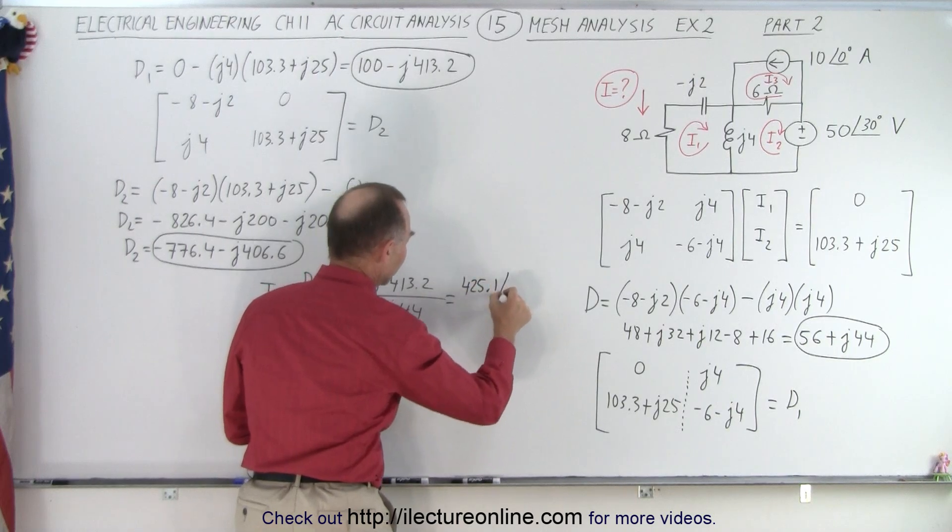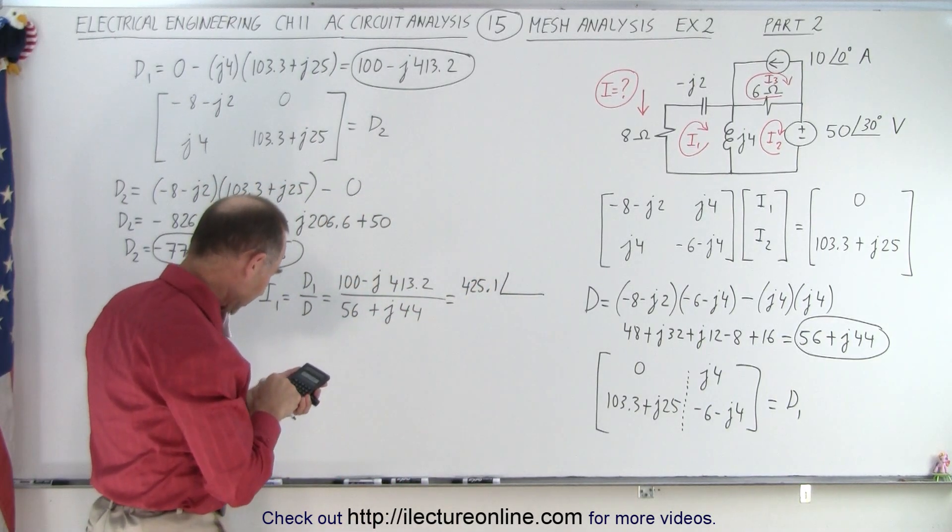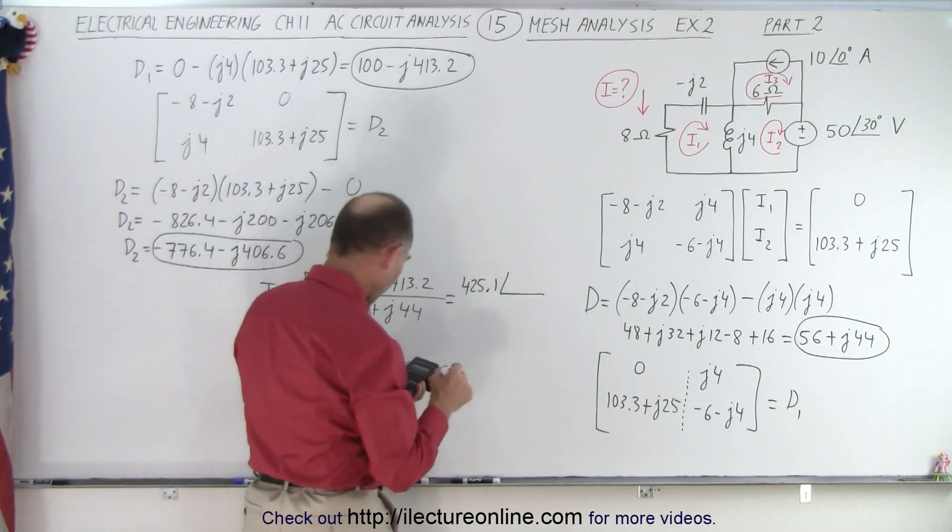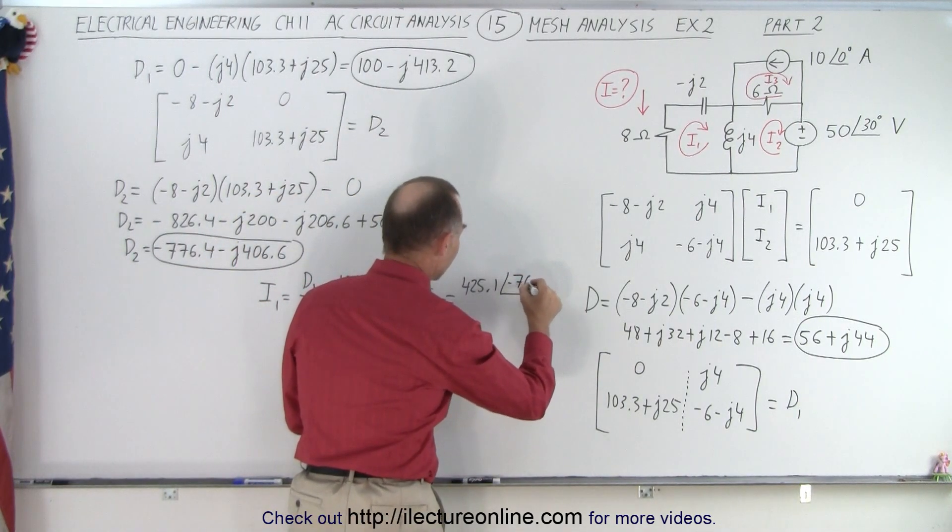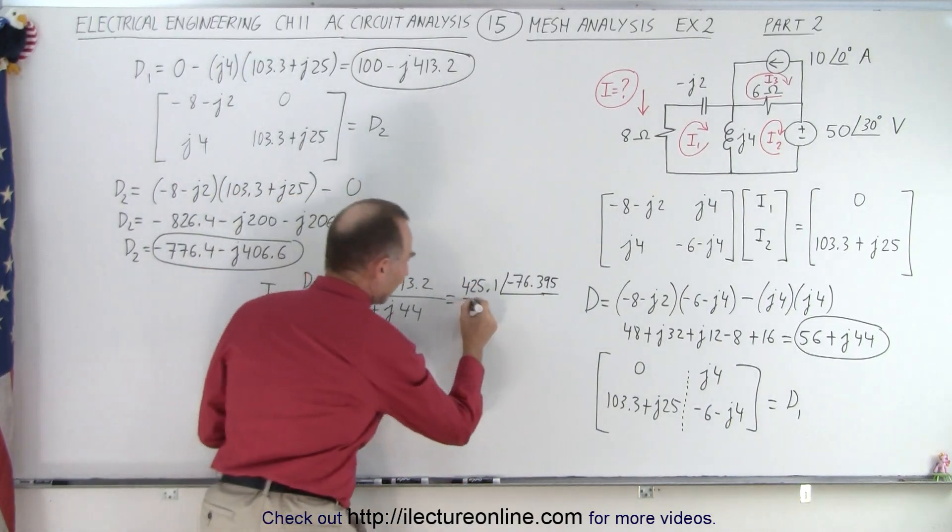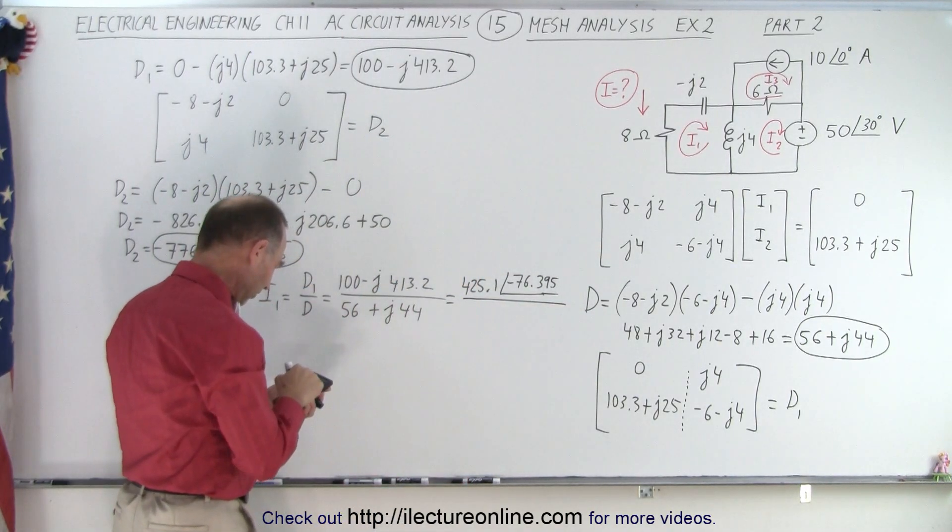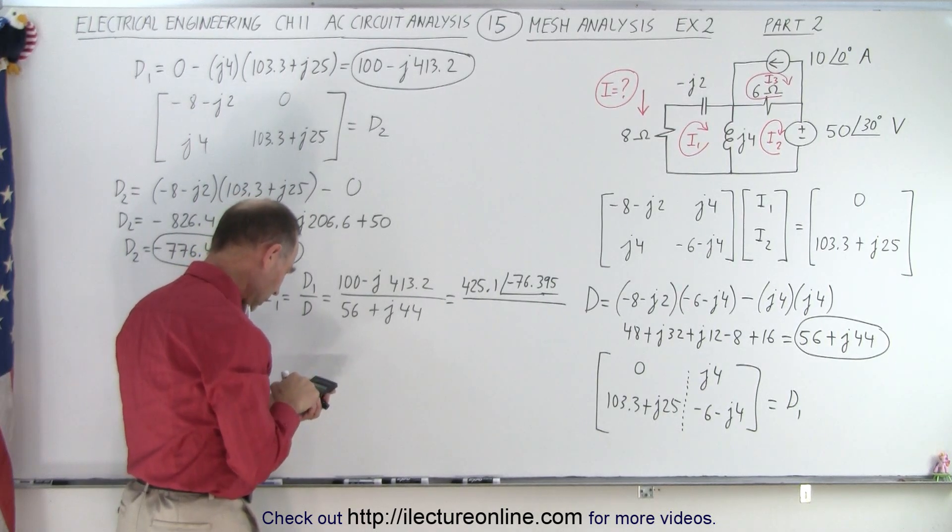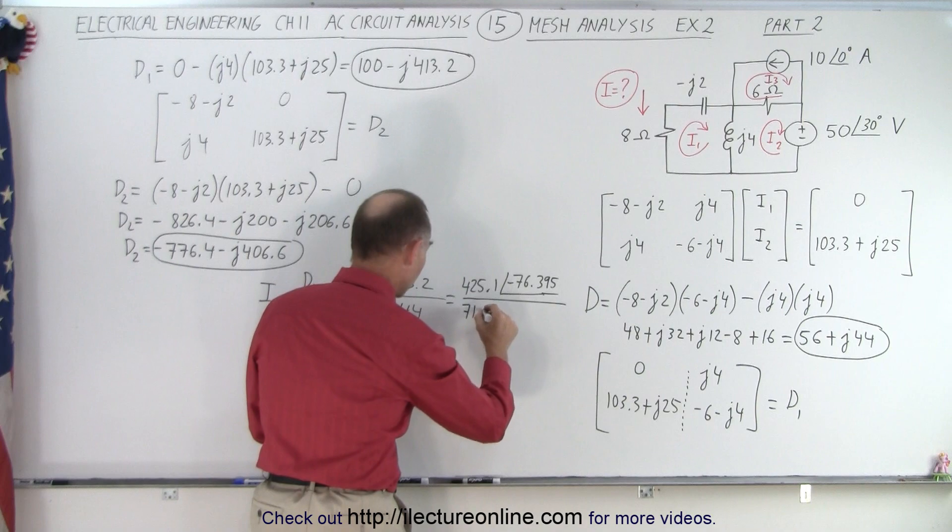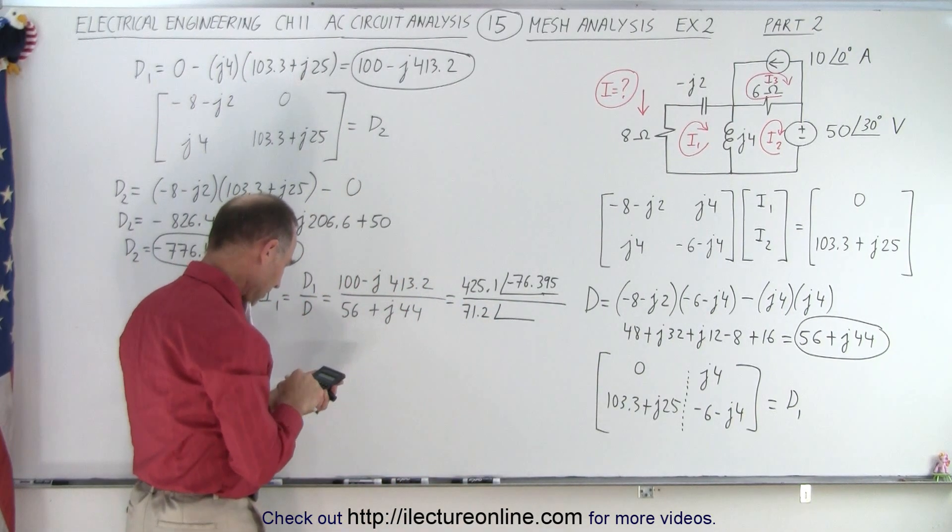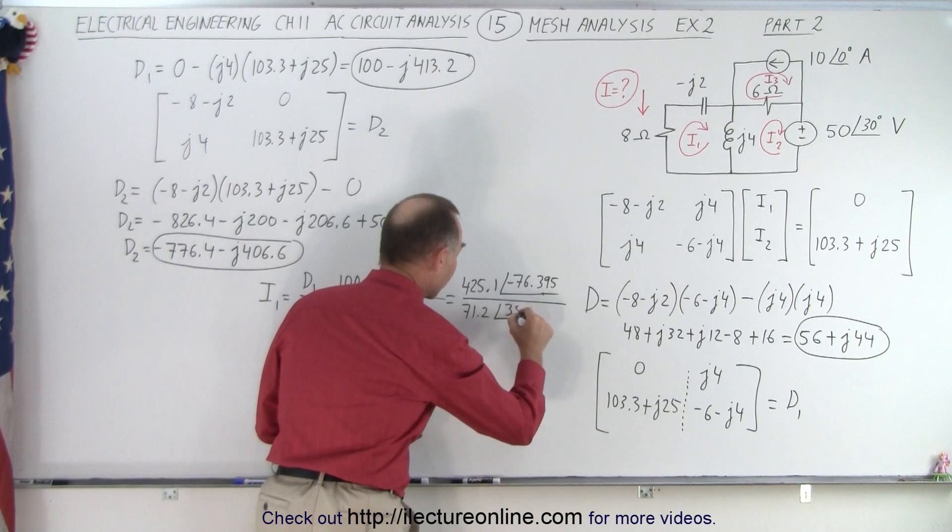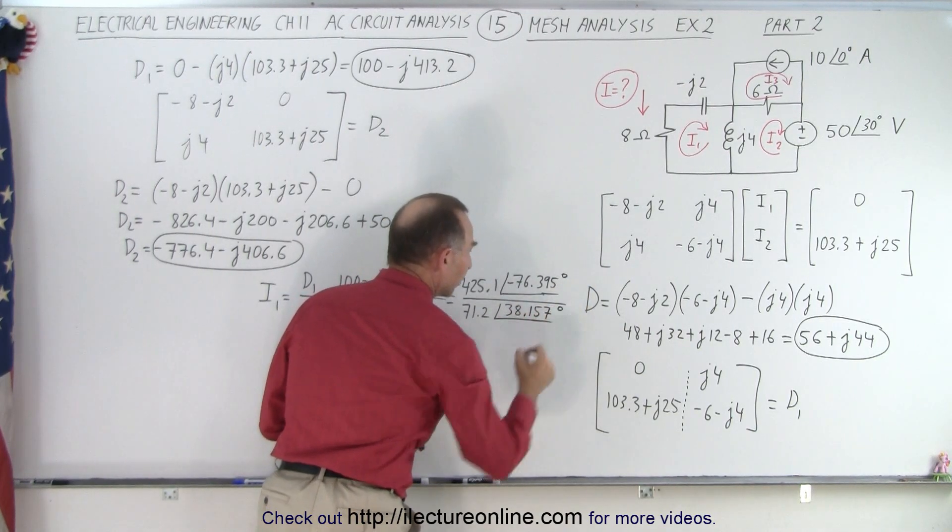So 425.1 with a phase angle of, so that's a minus, so we're at 413.2 divided by 100. And take the arc tangent of that, that would be minus 76.40. So minus 76 point, let's keep it three significant figures in three decimal places. Divided by the denominator, we have 56 squared plus 44 squared equals, that gives us 71.2. 71.2 with a phase angle of 44 divided by 56. That gives us, take the inverse tangent, 38.157.